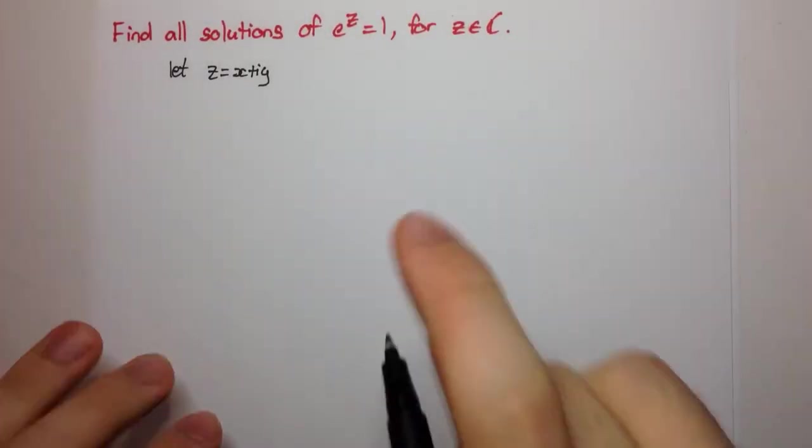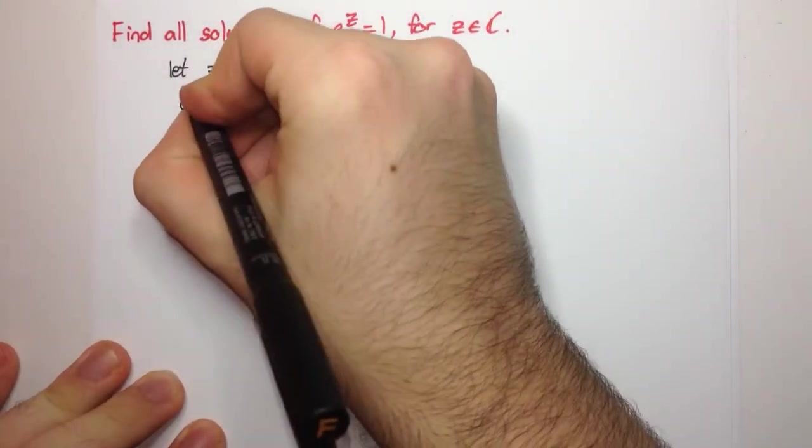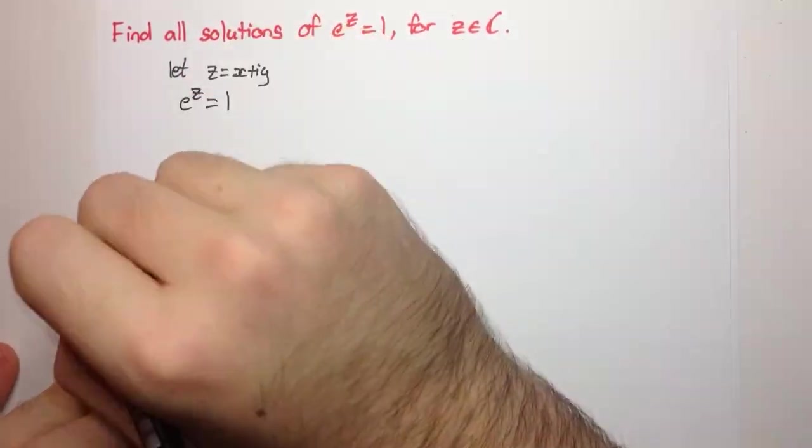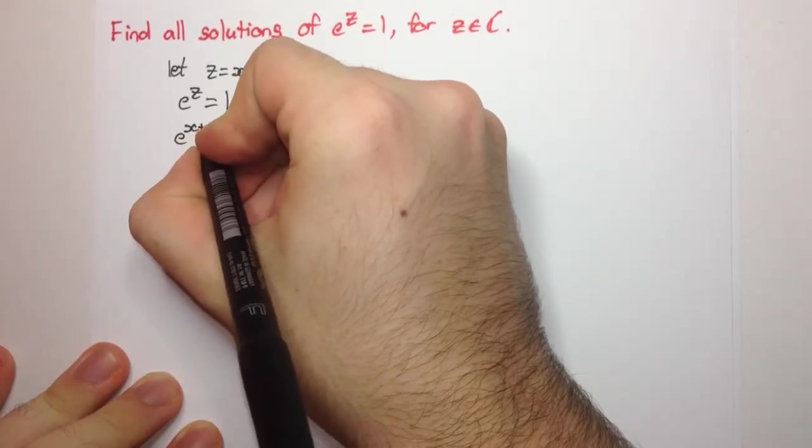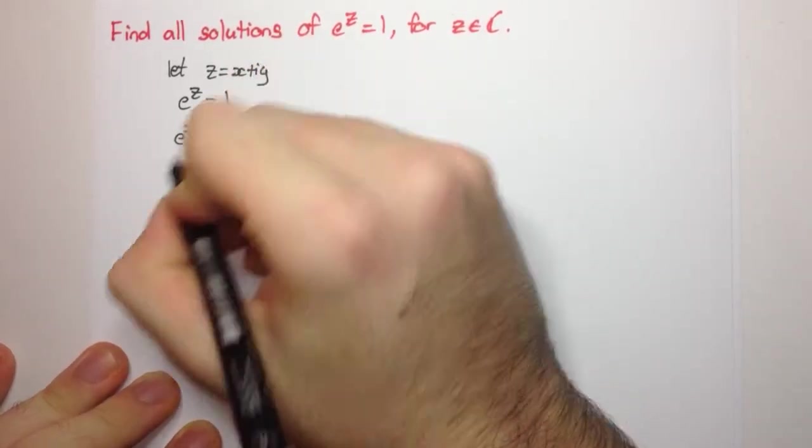Now we can go ahead and solve this. Let's write it: e to the z equals 1, then we can say that e to the x plus iy is equal to 1.